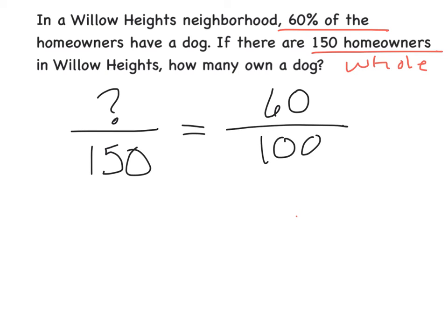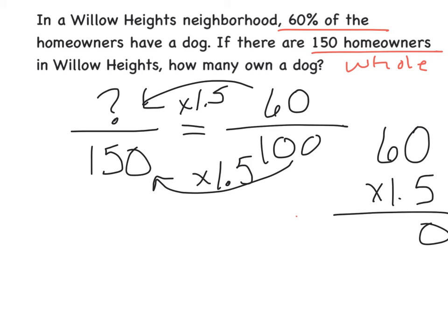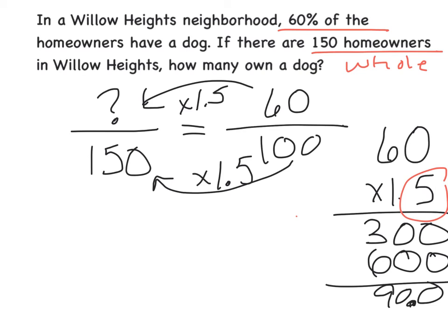We could set up our proportion. I don't know what my part is, but I do know there's 150 whole members of the neighborhood. I have 60% out of 100. You could use your proportion and say, I can go from 100 to 150 by times it by 1.5, so I could also do this to the 60. Come off to the side and do your multiplication: 5 times 0 is 0, 5 times 6 is 30. Placeholder, 1 times 6. You'll get 900. But I have one number behind the decimal right here, so there needs to be one behind the decimal. That would tell me that there are 90 homeowners with dogs in the neighborhood.